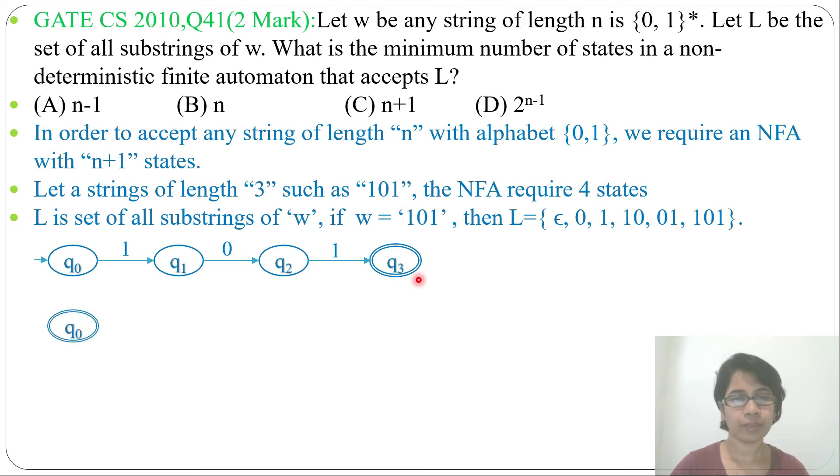We need to find all the substrings of this. To find prefix, you can make all states as final, but here we need to find all substrings. So we need to modify that. Now all states q0, q1, q2 are final states. Now it will accept ε, and it will accept 1, it will accept 10, it will accept 101. But what about 0 and 01? It is still not accepting 0 and 01.